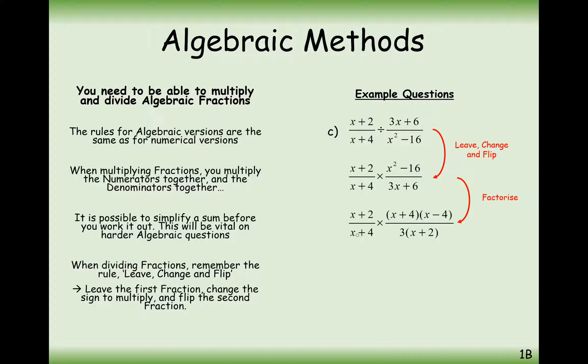And now we can spot multiples either up and down in between a single fraction, or diagonally as well on a numerator and a denominator. As long as you're always cancelling out a numerator and a denominator expression, you're fine. So cancel out an x plus 2 and cancel out an x plus 4. And all we're left with is x minus 4 over 3. So sometimes very complicated questions can simplify very much neater than they previously were.